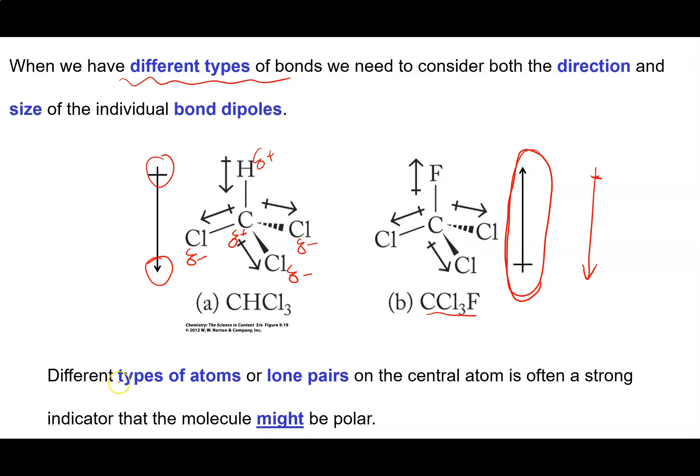So one thing to be very, very aware of is that different types of atoms on our central atom, or the presence of lone pairs on the central atom, is very strong evidence that the molecule may be polar. Now, it's not always the case, but it's very strong evidence. You need to think about whether you're going to have an asymmetric distribution of electrons around your central atom. Are they being pulled collectively in one direction over another?